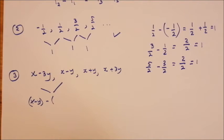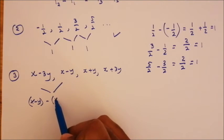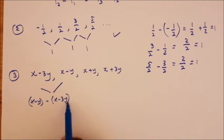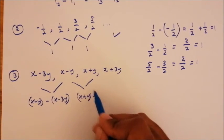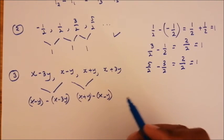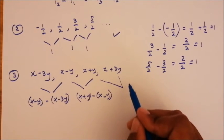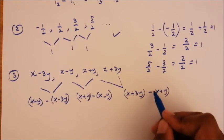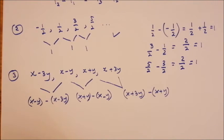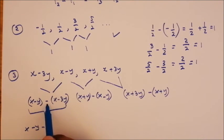Don't let the x's and y's disturb you — just continue as normal. Make sure to put the subtracted term in brackets so the negative is properly distributed. So: (x minus y) minus (x minus 3y), then (x plus y) minus (x minus y), and (x plus 3y) minus (x plus y).